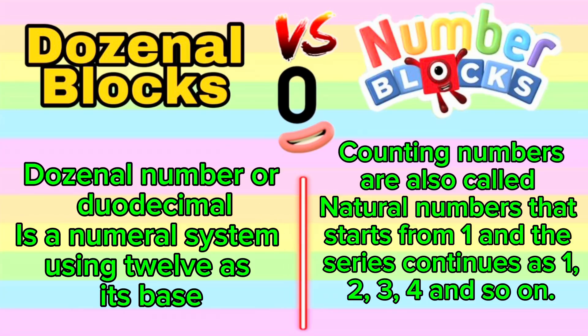Dozinal Blocks vs. Number Blocks. Dozenal number, or Duodecimal, is a numerical system using 12 as its base, while counting numbers are also called natural numbers, that start from 1 and the series continues as 1, 2, 3, 4, and so on.